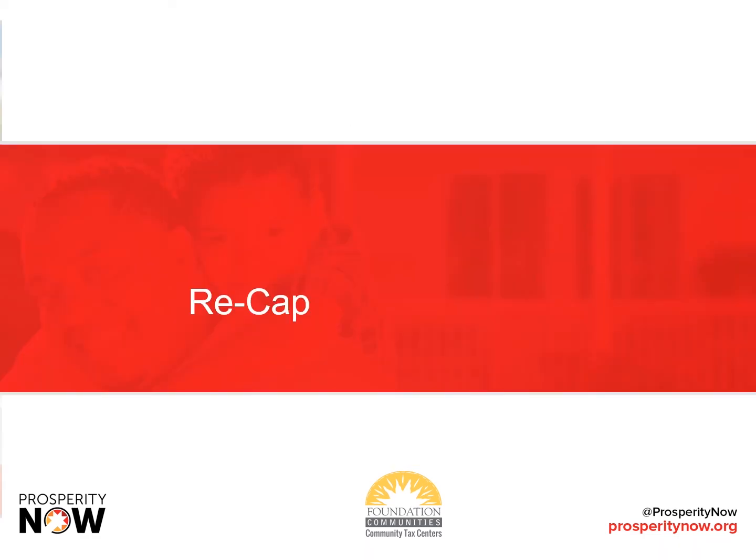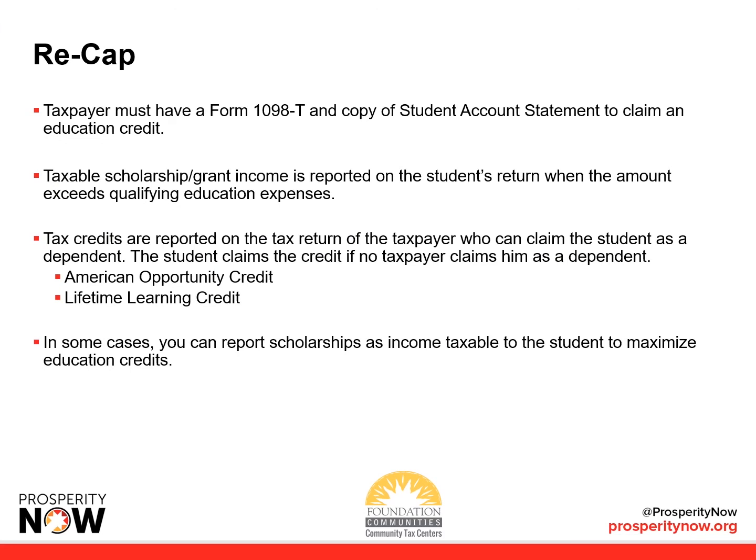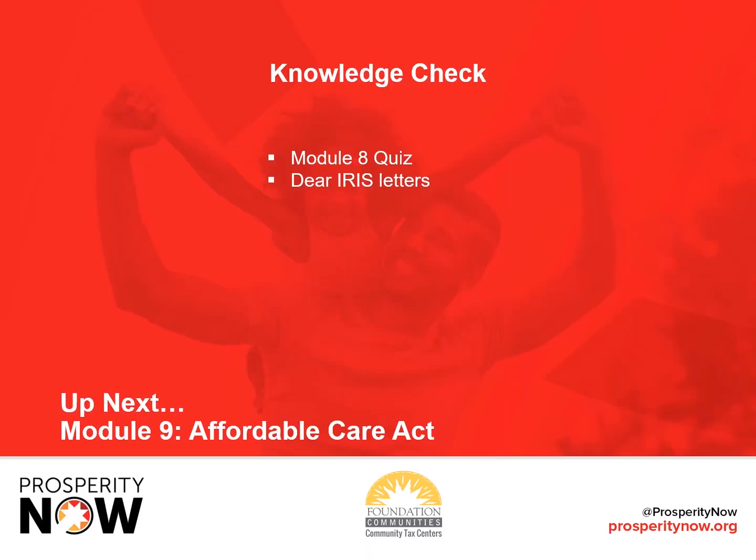Let's recap. As before, the taxpayer must have Form 1098-T and a copy of the student account statement to claim an education credit. Taxable scholarship and grant income is reported on the student's return when the amount exceeds qualifying education expenses. In some cases, you can report scholarships as income taxable to the student to maximize education credits.